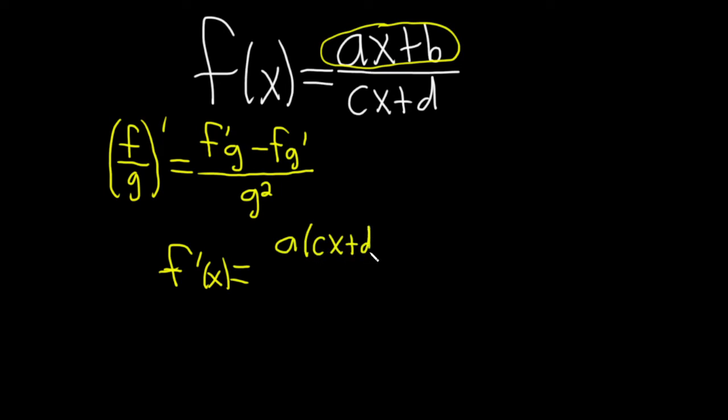minus the top, so ax plus b times the derivative of the bottom. The derivative of d is 0, the derivative of x is 1, so we're left with the c. All of this is being divided by the bottom one squared, so cx plus d, and all of that is squared.